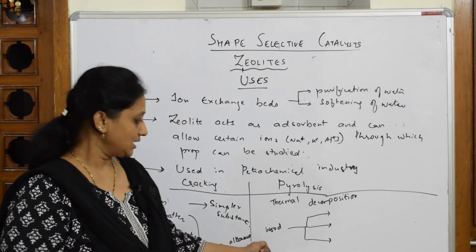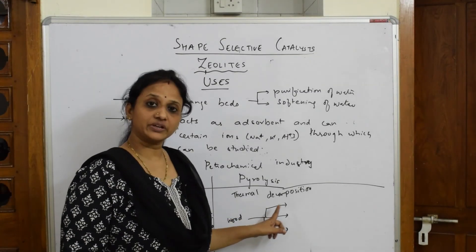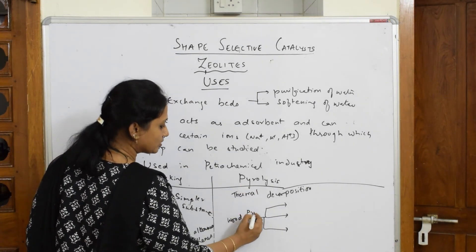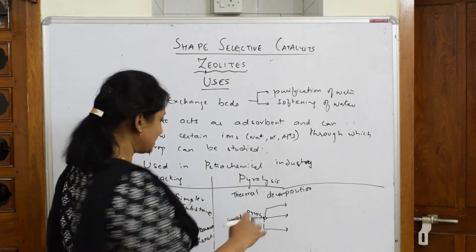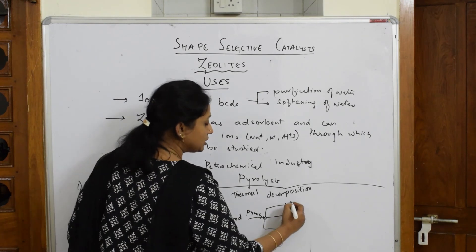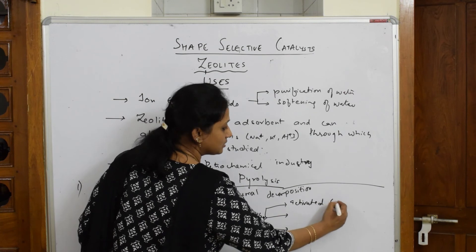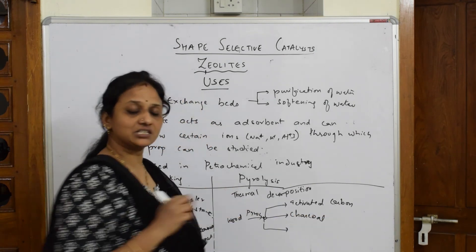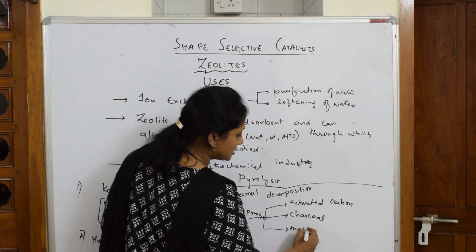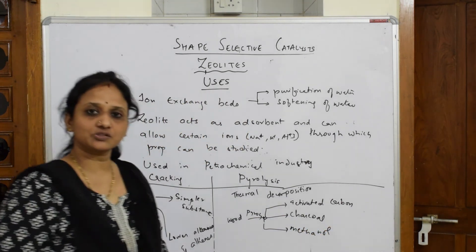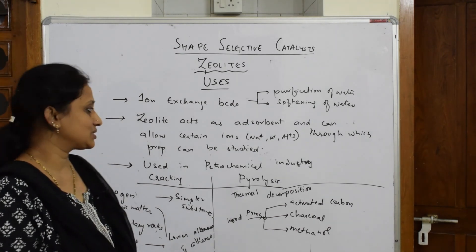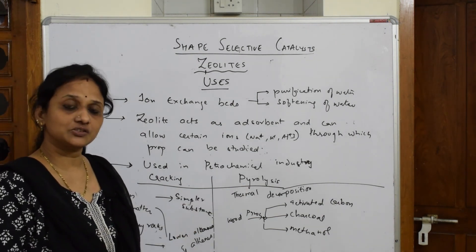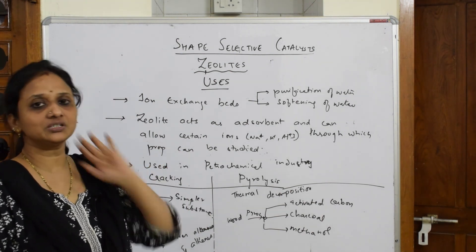Pyro means heat, lysis means cleavage or formation of two or more products. When wood undergoes pyrolysis — which is a thermochemical decomposition — it breaks up into products like activated carbon, charcoal, and methanol. These are the different pyrolysis products. For one or two mark questions, this data is more than enough.